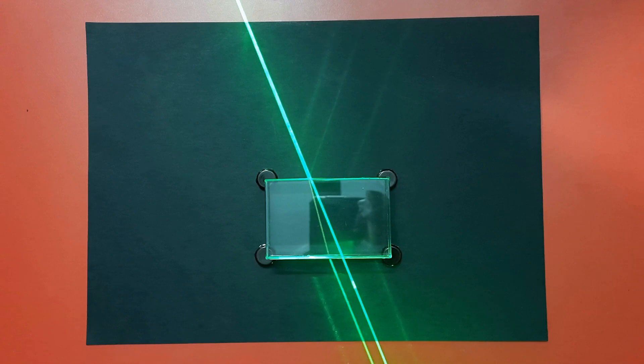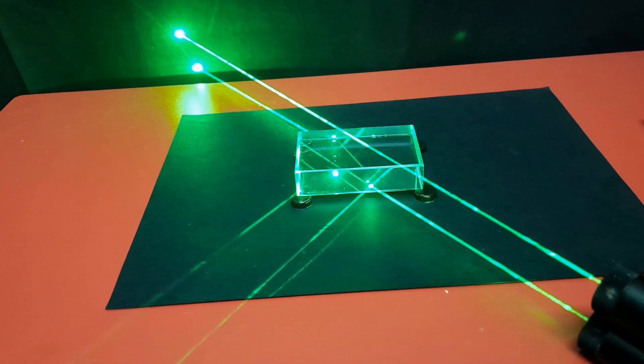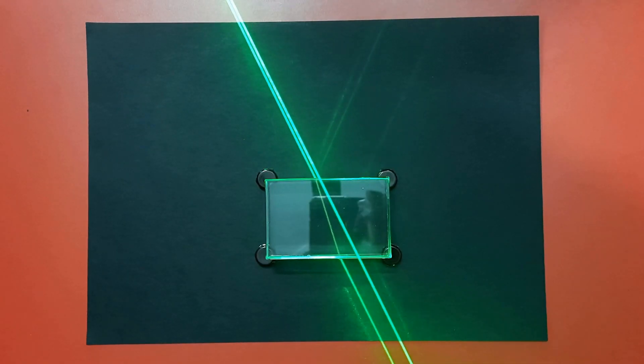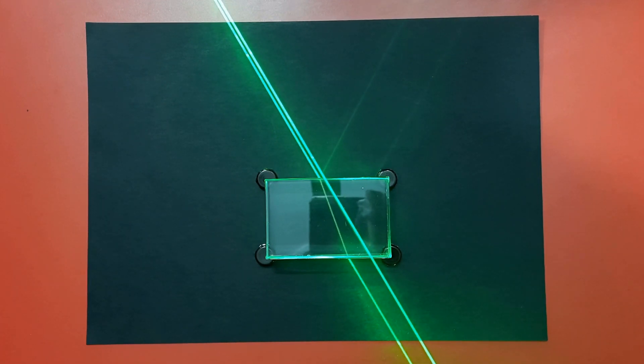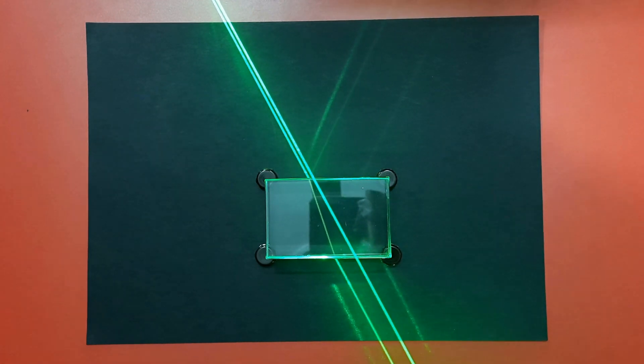We now pass the lower laser beam through the glass slab and the upper laser beam continues to move in the air. You can see the emergent beam which comes out of the glass slab is parallel to the incident beam.